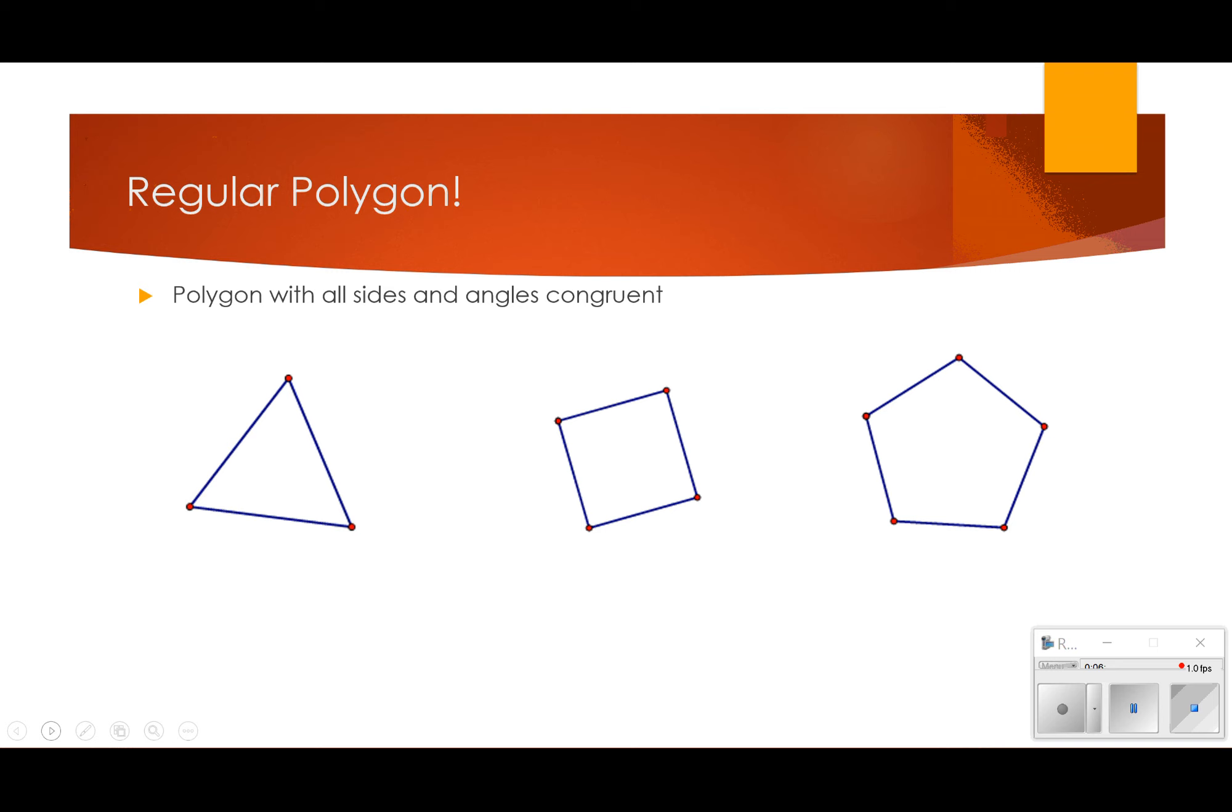A regular polygon is just a polygon with all sides and all angles congruent. So a square is a regular polygon. An equilateral triangle is a regular polygon. All of my sides are congruent. All of my angles are congruent. Square, of course, all of those angles are going to be right.